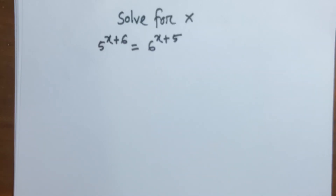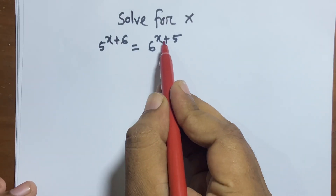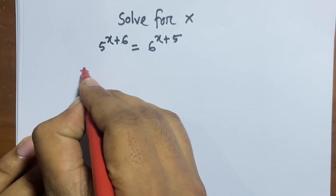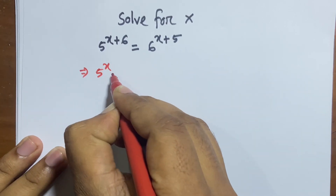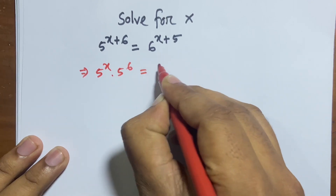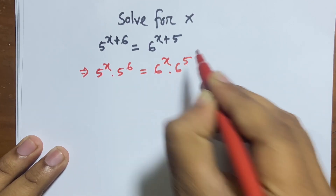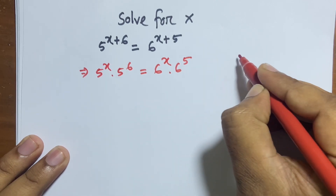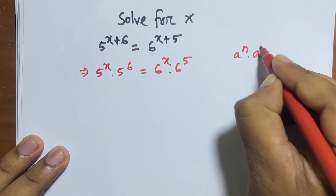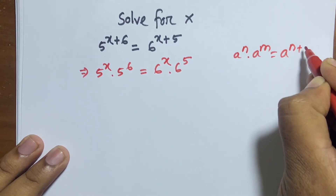Hello everyone. Today I solve this problem: solve for x, 5^(x+6) = 6^x + 5. Now, 5^x · 5^6 = 6^x · 6^5. I follow this formula: we know that a^n · a^m = a^(n+m). I apply this formula in this line.